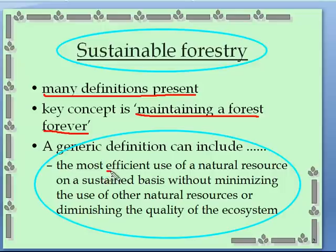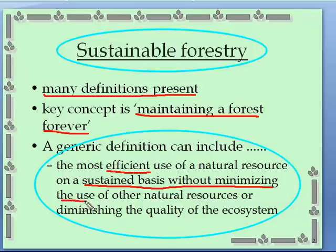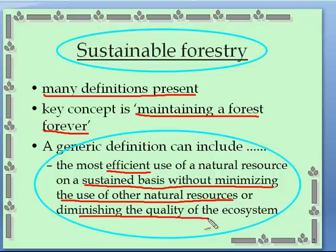Let's break this down. The most efficient use means the least-cost approach. It does not just pertain to forests but to other natural resources as well, on a sustained basis, without minimizing the use of other natural resources. For example, if one of the natural resources is game for hunting — minimizing moose habitat, deer habitat, and so on. Also tied to that is not diminishing the ecosystem, meaning anything we do will not have long-term damage to that ecosystem. That's one definition and certainly a great one to follow.